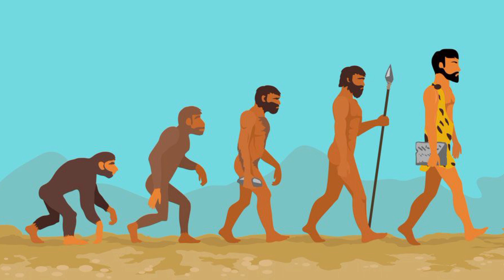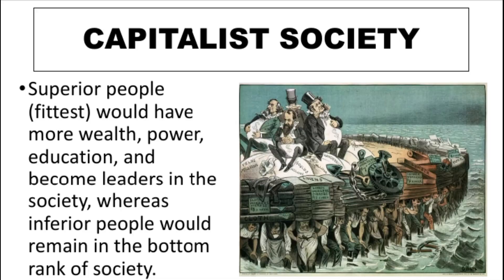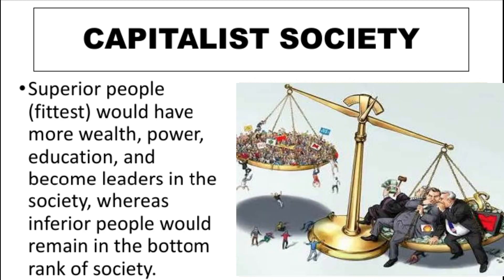He says that organisms that adapt to their environment exist and survive. The superior class, which we call the fittest, possesses more wealth, power, and education, and they become leaders of societies. While the inferior people remain at the bottom rank of the society.